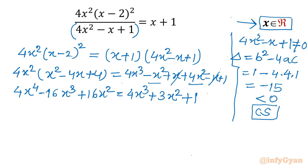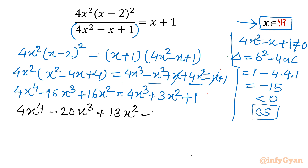Taking all terms to one side: 4x⁴ minus (16 plus 4) x³ gives minus 20x³. Then 16x² minus 3x² gives 13x², and minus 1 equals 0. So our equation is 4x⁴ minus 20x³ plus 13x² minus 1 equals 0. This is a degree-four polynomial and we need to find all four solutions.